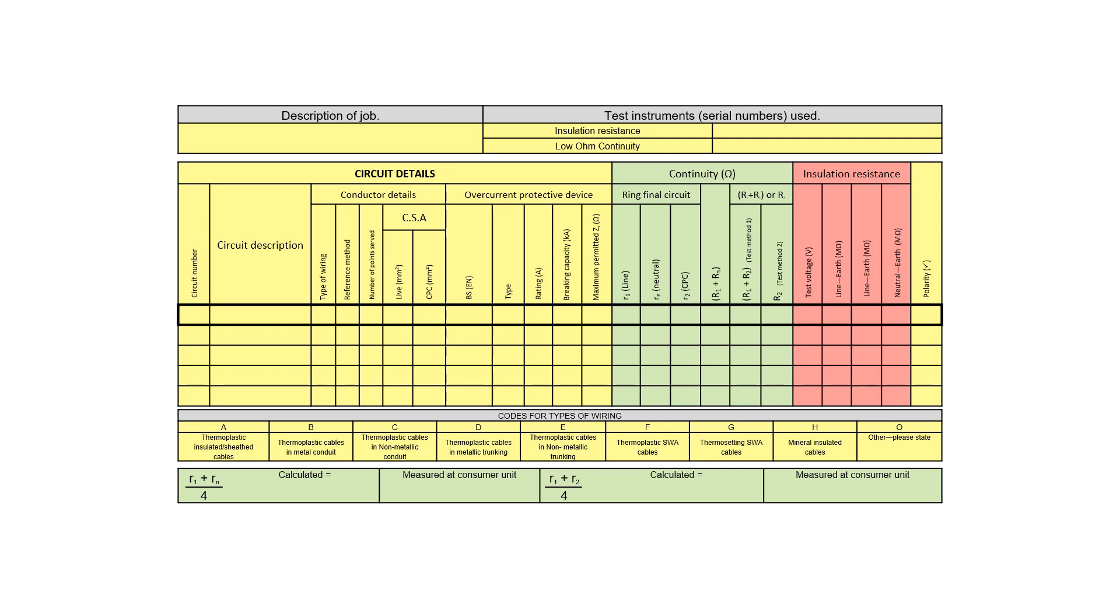During your career, we will call the highest resistance of test method two on the CPC, the R2. And if you were completing an electrical installation certificate, then you would record that value in the box marked R2, which is shown here.